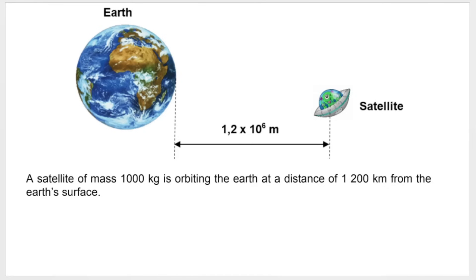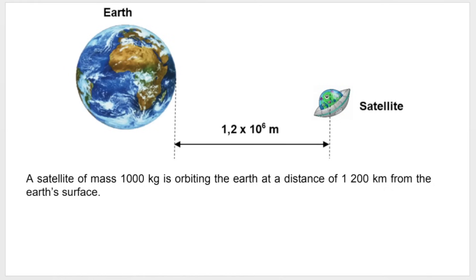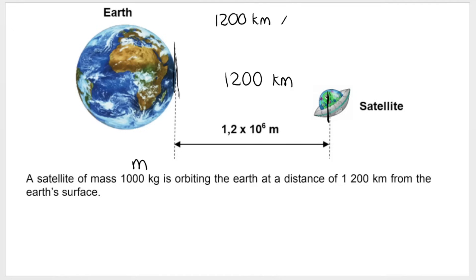Here is the question and we will be answering all of these sub-questions in this video. We've got Earth, and they say a satellite of mass 1000 kilograms is orbiting the Earth at a distance of 1200 kilometers from the Earth's surface. What is nice about this question is that they've actually converted it to meters already for you. To go from kilometers to meters, you multiply by 1000, so that would be 1,200,000 meters, which in scientific notation is 1.2 × 10⁶.